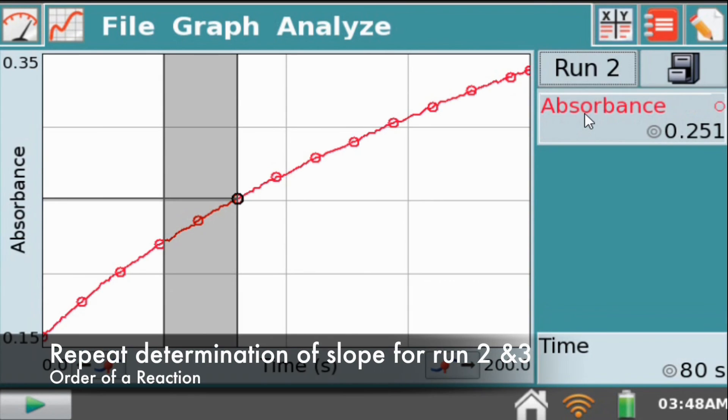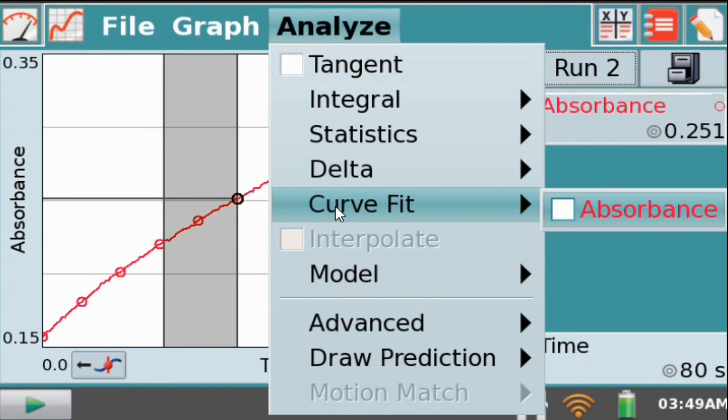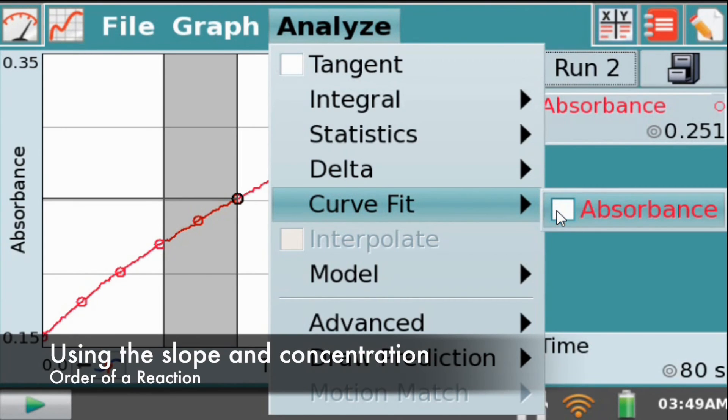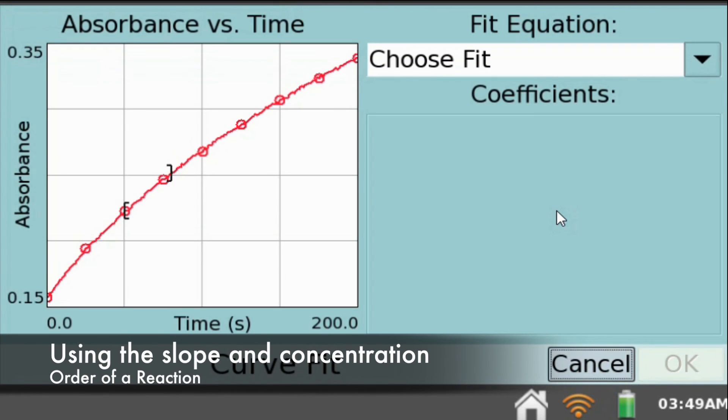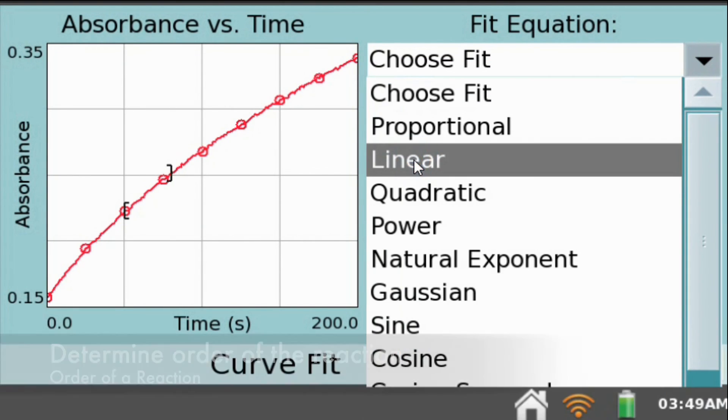Make sure you record the value of the slope m in your data table for all the three runs on your data sheet. Using the data collected, you can determine the order of the reaction just as you would in the initial rate method problems.